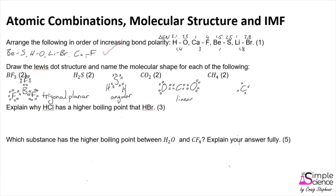In CH₄ (methane), carbon again has four valence electrons and forms single bonds with each of the four hydrogens. We draw it in two dimensions, but we know that in three dimensions the shape is actually tetrahedral. When marking questions like this, the most common errors are leaving out the bonding electron pairs or the lone electron pairs on nearby atoms. The names must be exactly as given, and we try to draw the three-dimensional shape.